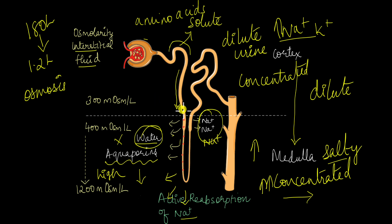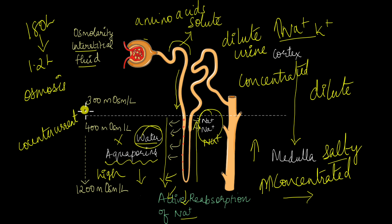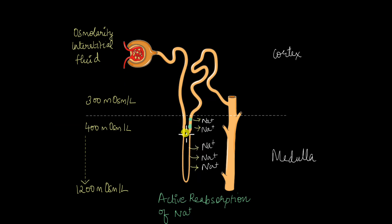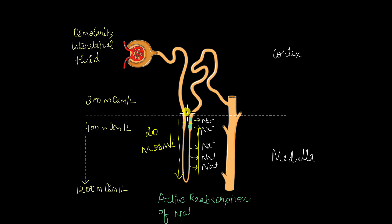This is what forms the counter-current part of counter-current multiplication, because the filtrate is moving in two different directions — down the descending limb and then up the ascending limb. What about the multiplication part? The multiplication part comes from the difference in the osmolarity of the fluid in the descending limb and the ascending limb. Initially, the difference in their osmolarity is around 20 milliosmoles per litre. But as more and more fluid keeps entering the descending limb, more water exits, and more sodium is pushed out in the ascending limb.